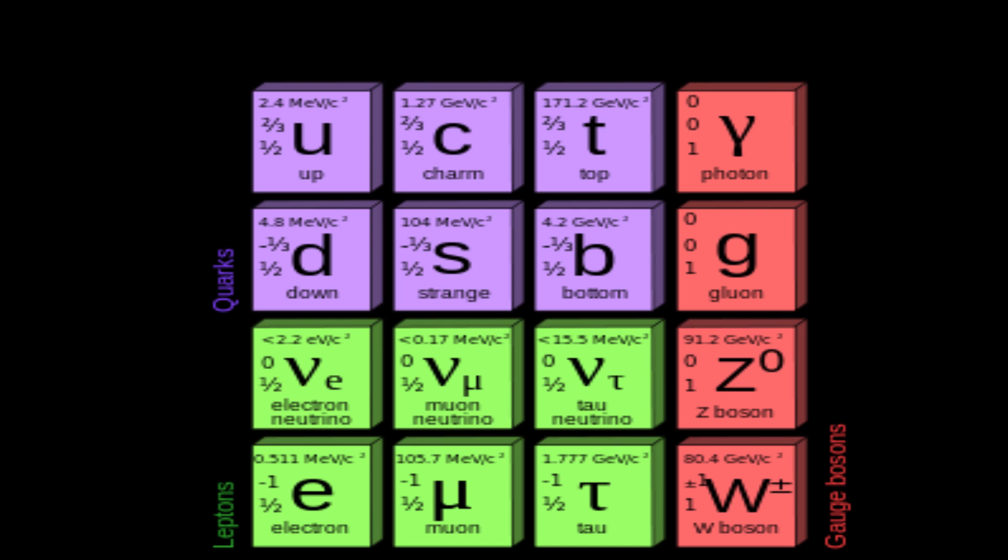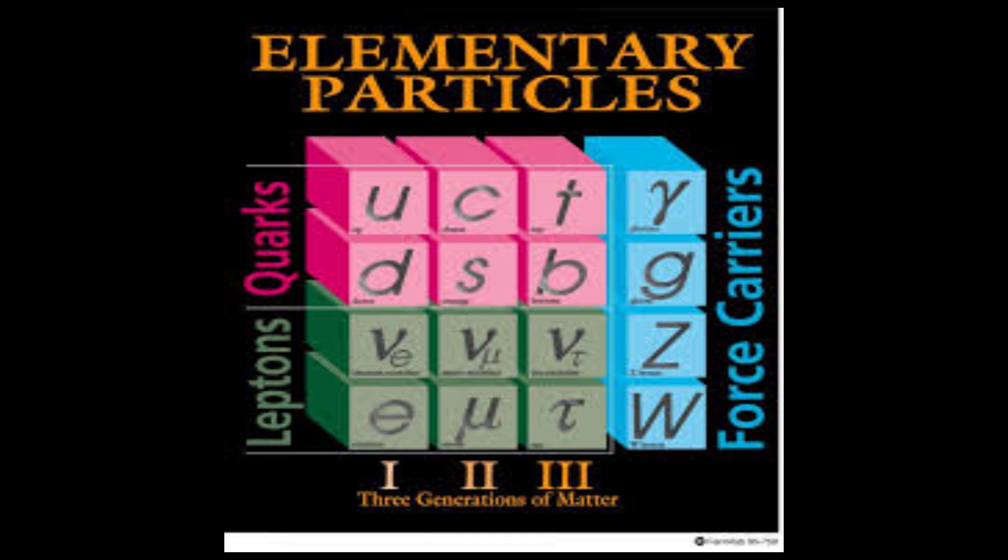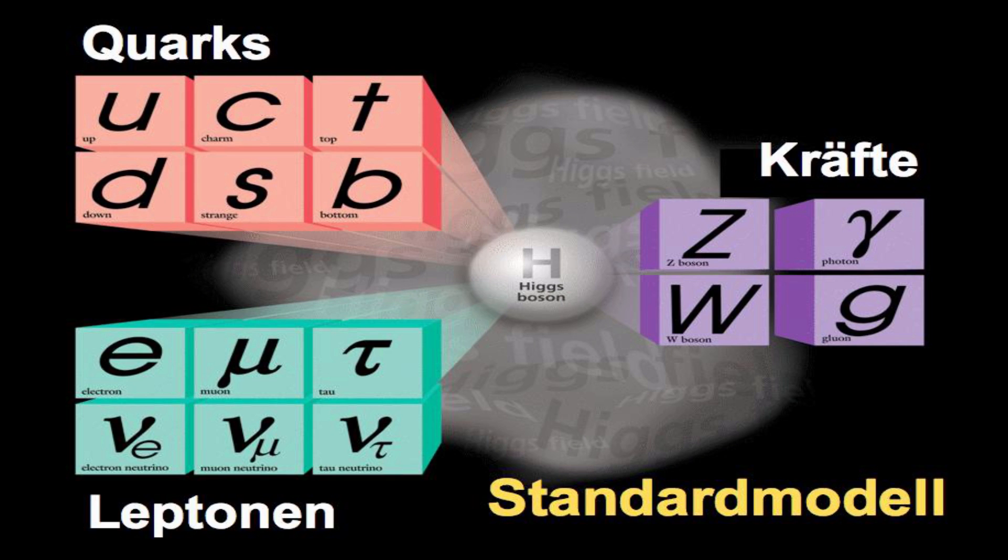The Standard Model puts field theories QED and QCD under one umbrella. Gravity remains outside the Standard Model. According to the Standard Model, the basic forces are transmitted between quarks, leptons, and the third family of particles. These are all gauge bosons that I have already talked about.